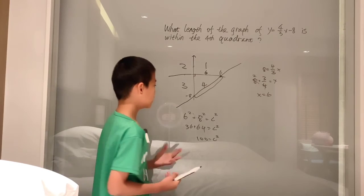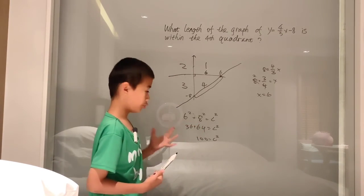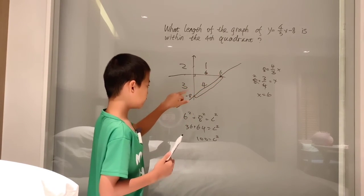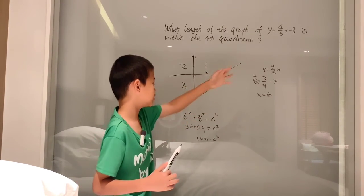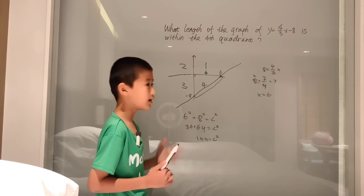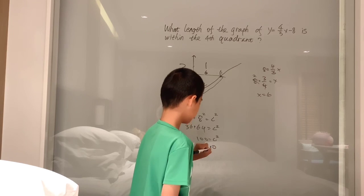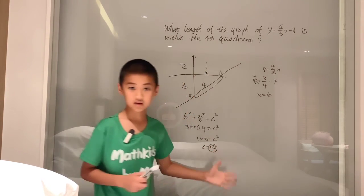but you can also use, think, well, 6 and 8, that's 3, 4, 5 triangle, right? Since these are the bases, 3 times 2, 4 times 2, which means, well, the hypotenuse is 5 times 2, or, just like we found here, our answer is 10. Okay.